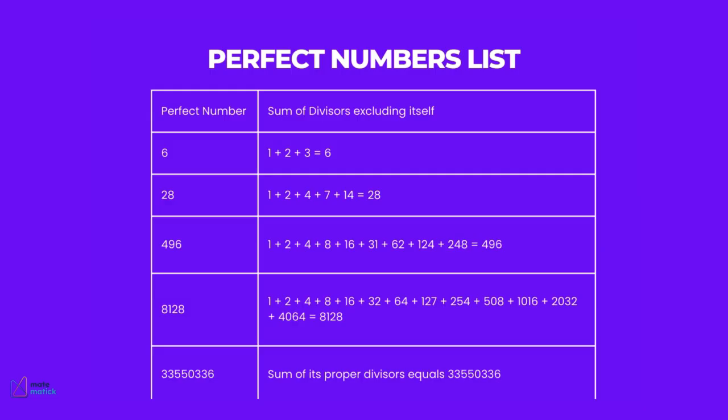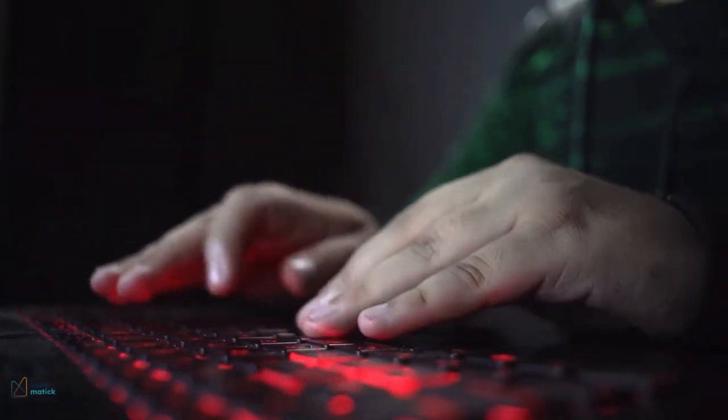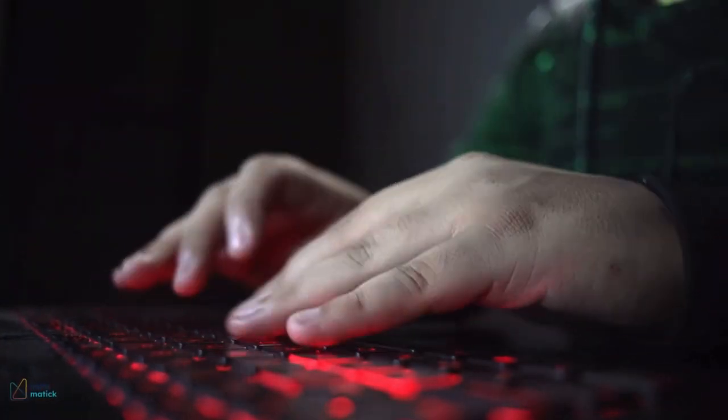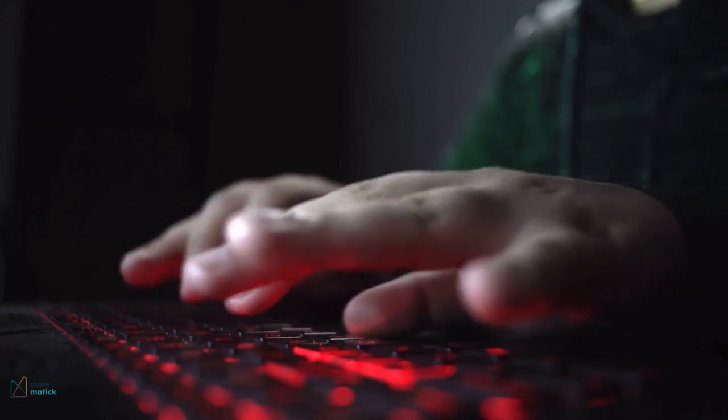While even perfect numbers have been well studied, the existence of odd perfect numbers remains one of mathematics' greatest unsolved mysteries. Despite extensive research, no one has yet discovered an odd perfect number, and it's unknown whether any exist.